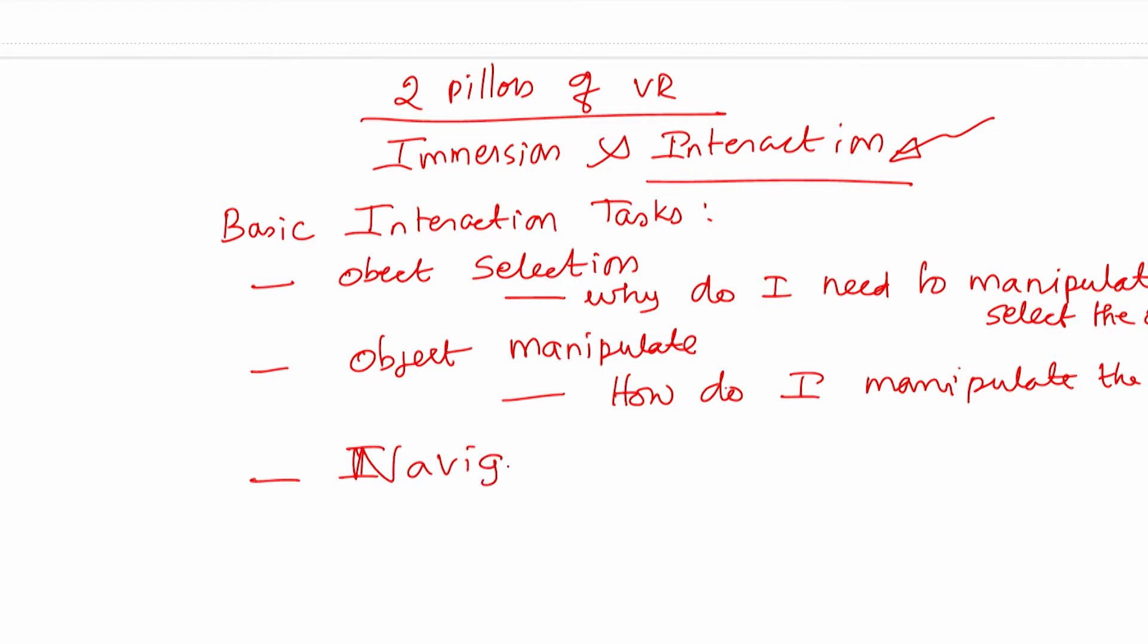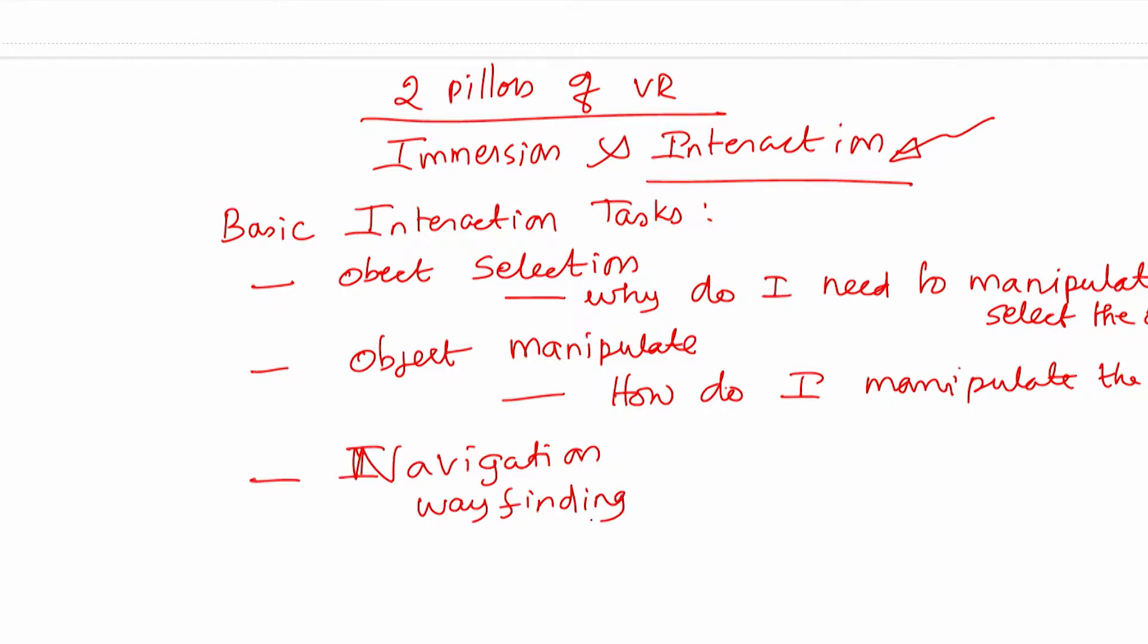Navigation systems. It is like wayfinding. We want to move around the virtual reality. Even the turning of the head is the navigation system. We want to look around the virtual environment to find out what objects are there, then only we get into object selection or object manipulation. Wayfinding.